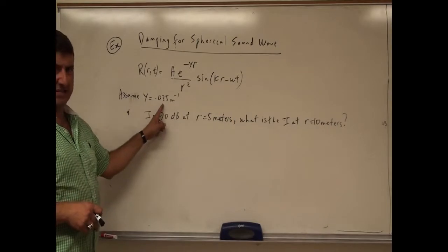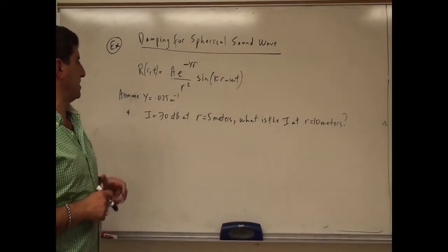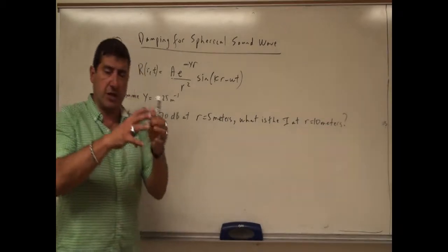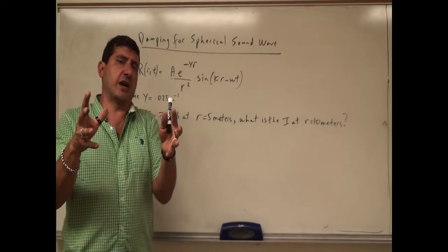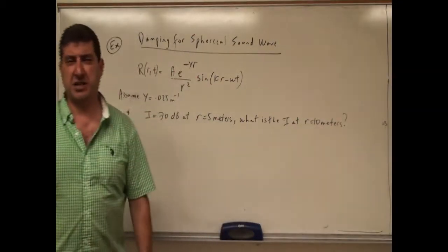We're going to assume that the damping constant is the same and assume here that the intensity is 70 decibels at R equals 5 meters. So now if the person is 5 meters away and now they go to 10 meters away, what's going to be the intensity?